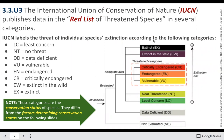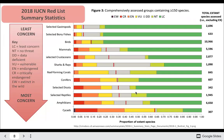A species could be extinct, meaning there are none left. It could be at any level of threatened — maybe critically endangered, endangered, or vulnerable — all threatened with going extinct. Then there are less-concern categories: near threatened or least concern, which are not currently at risk of going extinct, though they could be at some point.